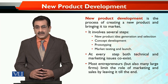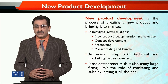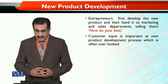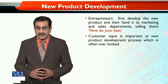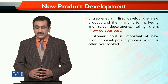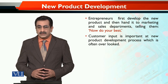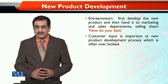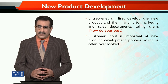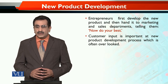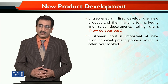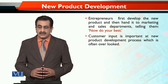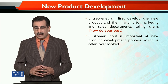Entrepreneurs often limit the marketing role and the sales role until the final product is ready. Entrepreneurs first develop the new product and then hand it to the marketing and sales department, telling them to now do their best. This is a recipe for disaster — it means keeping marketing and sales out of the loop, so they don't know the market requirements and what the product needs to be.